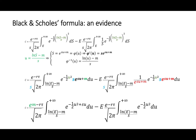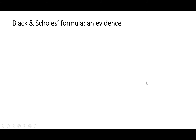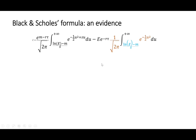We can simplify some terms. First, the small s terms in blue. For the second integral, we can also simplify by s and by exponential of s*u plus m, which is in red. We would then like to simplify these two integrals and refer to the cumulative distribution function of the standard normal distribution.